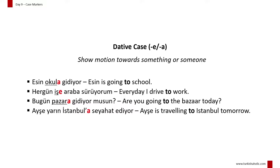The dative case suffix is used to show motion towards something or someone. In Turkish, the dative case suffix can be added by adding -e or -a to the end of a noun. These suffixes equal to the preposition 'to' in English. Words with the last vowel a, ı, o, u take the ending -a, whereas words with the last vowel e, i, ö, ü take the ending -e.